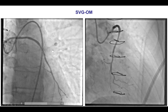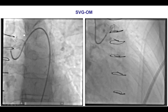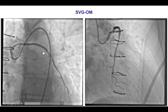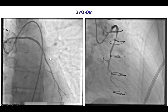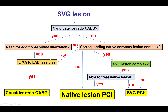He did, however, have in-stent restenosis in the SVG to the obtuse marginal branch just distally to the previously placed stent. This is an example of a patient with a saphenous vein graft lesion who is clearly not a candidate for redo bypass, since he already had two cardiac surgeries. The question should always be in those patients: is there an option for doing native coronary artery PCI?